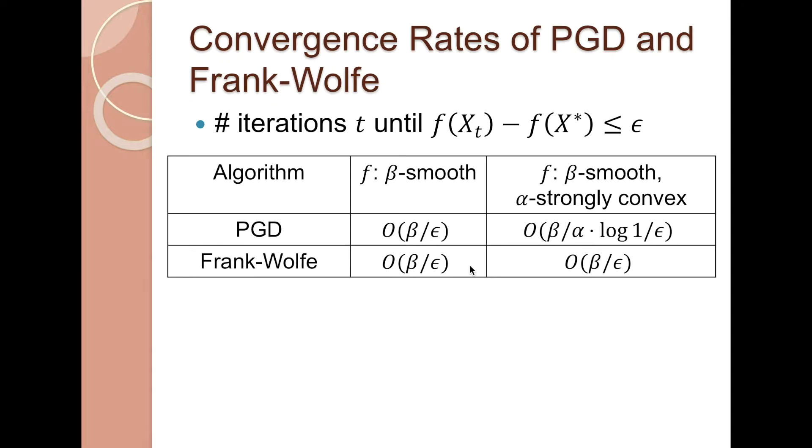However, Frank-Wolfe can only converge in 1 over epsilon iterations in both cases even if f is both smooth and strongly convex. This is tight in general.